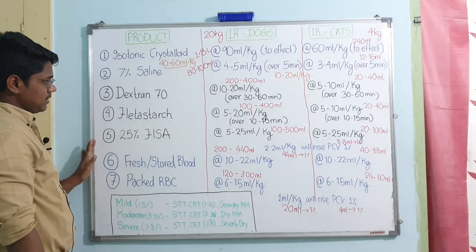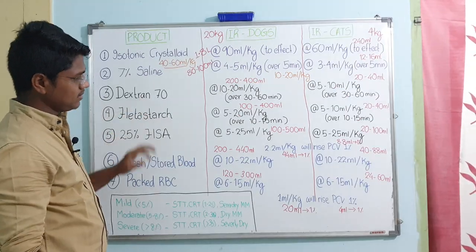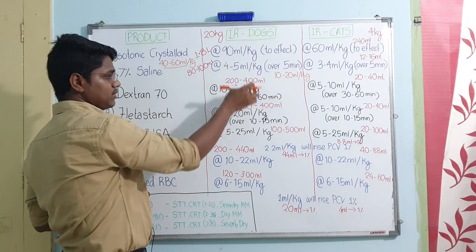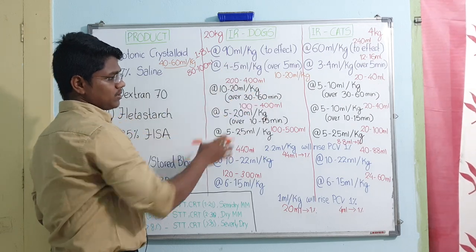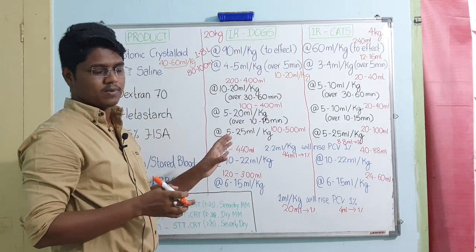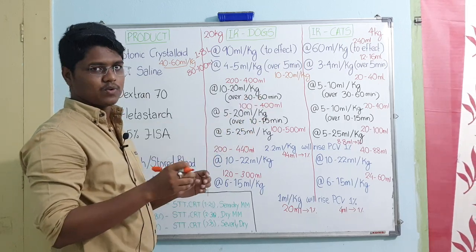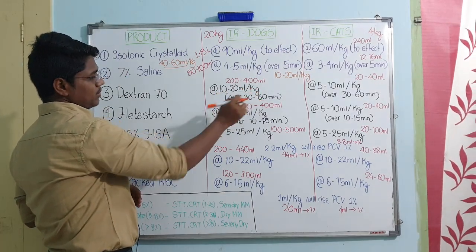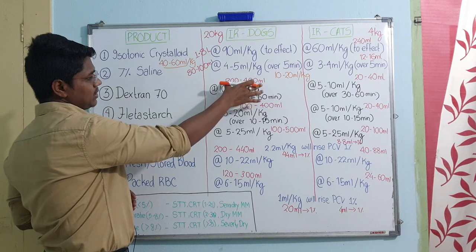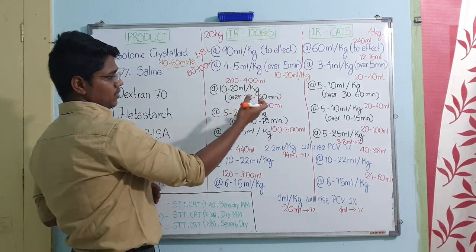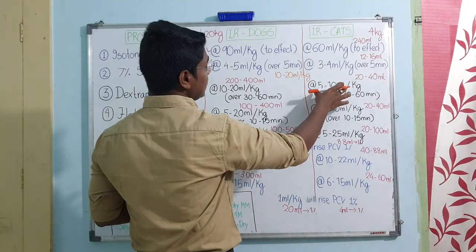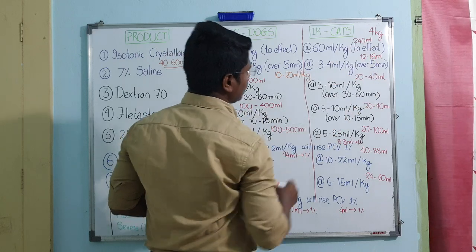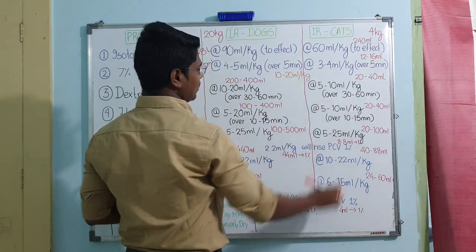Coming to colloid dose rates. Dextran 70: dose rate is 10 to 20 ml per kg, given over 30 to 60 minutes. The period is longer because for the first 5 to 10 minutes you have to give slowly to check for anaphylaxis. For a 20 kg dog, it will be 200 to 400 ml over 30 to 60 minutes. In cats, it is 5 to 10 ml per kg; for a 4 kg cat, 20 to 40 ml over 30 to 60 minutes.